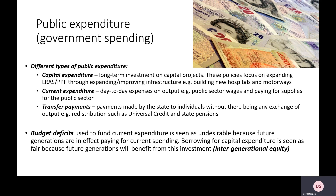So we have three types of government spending: capital expenditure, current expenditure, and transfer payments. Regarding budget deficits — a budget deficit is where the level of government spending exceeds the level of taxation received. In Britain, the government has operated with large budget deficits, and while efforts have been made to reduce them in recent years, COVID-19 has caused them to shoot up massively again.